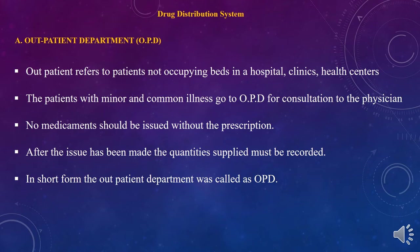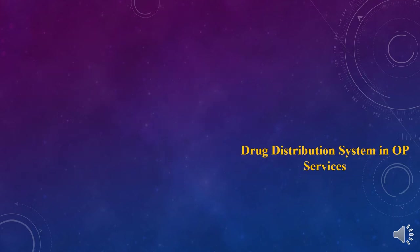The outpatient department is called the OPD. After receiving the manual prescription, the patient needs to reach the pharmacy to get their medicine. The quantity of supplies must be recorded in the pharmacy record. We now discuss what kind of drug distribution system is performed once the patient reaches the pharmacy — that is, the drug distribution system in OP services.